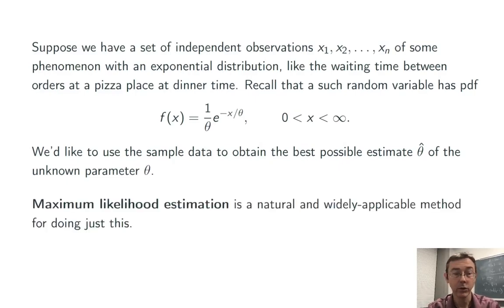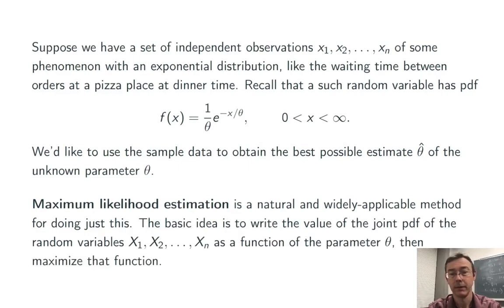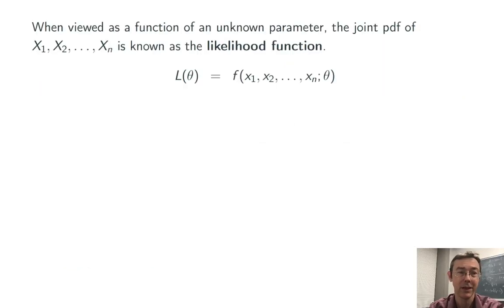The technique we're going to use is maximum likelihood estimation. This is natural, pretty straightforward, and very applicable. The basic idea is just to write the joint PDF of the random variables x1 up to xn as a function of the parameter theta, and then maximize that function with respect to theta.